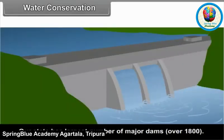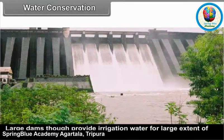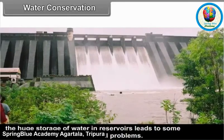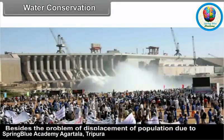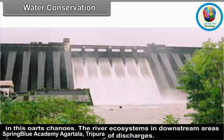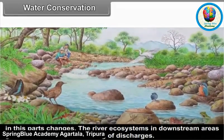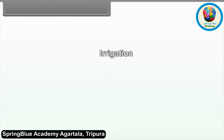Our state has the largest number of major dams, over 1800. Large dams, though they provide irrigation water for large extents of area, the huge storage of water in reservoirs leads to some environmental as well as social problems. Besides the problem of displacement of population due to construction of such dams, the flow conditions in the channel downstream the dam change considerably, and the river regime in these parts changes. The river ecosystems in downstream areas get threatened due to lowering of discharges.